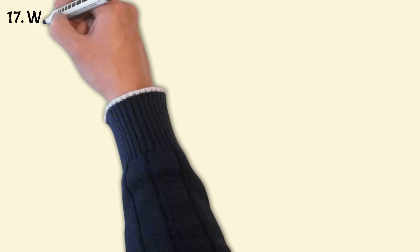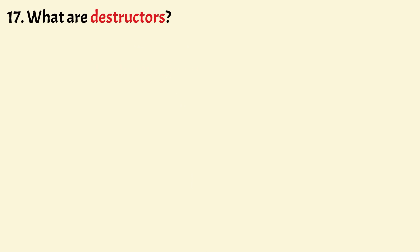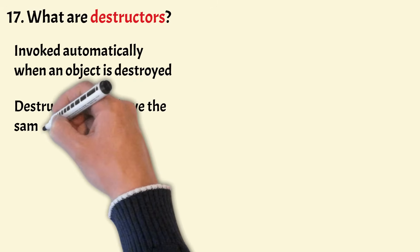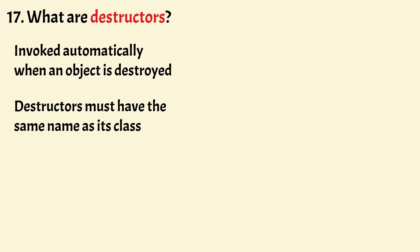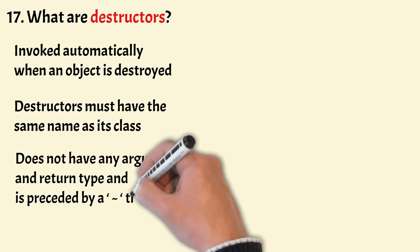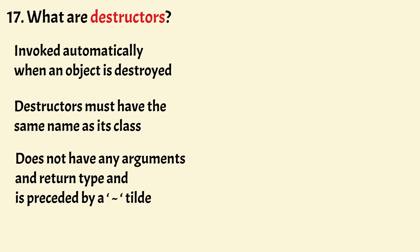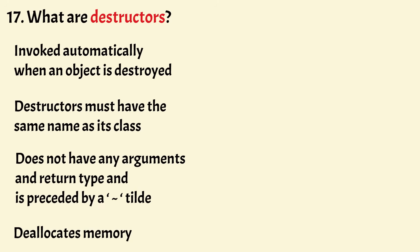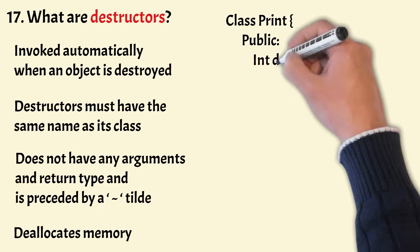Now let's understand what are destructors. A destructor is a special member function that is invoked automatically when an object is destroyed. Destructors must have the same name as its class, don't have any arguments or return type, and are preceded by a tilde sign. The most common use of destructors is to de-allocate memory that was allocated for the object.